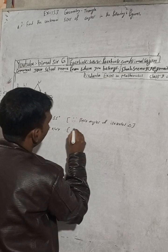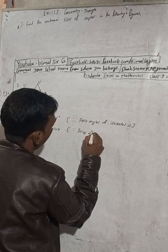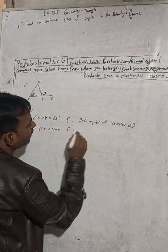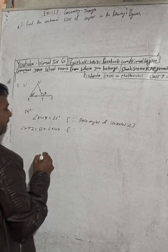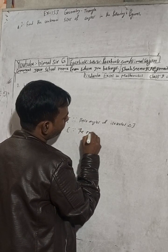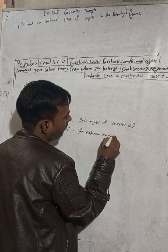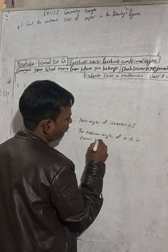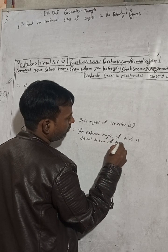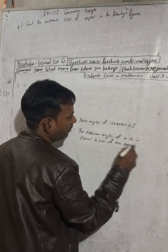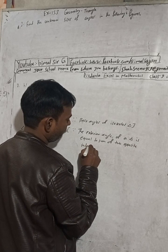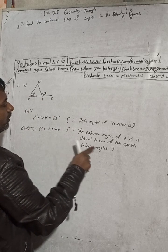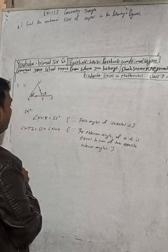Angle WYZ is the external angle. The exterior angle of a triangle is equal to the sum of the two opposite interior angles. So this external angle equals the sum of the two opposite internal angles.